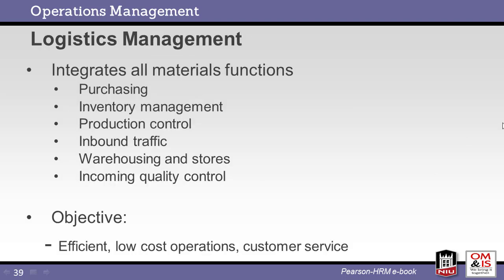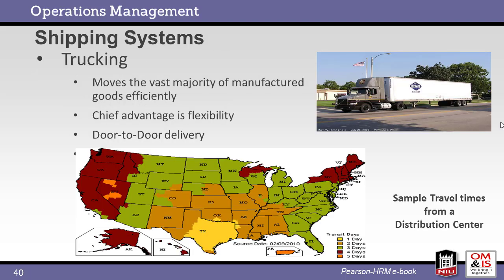Logistics management integrates purchasing, inventory, production, materials movement, and quality control. The goal is to improve efficiency, lower costs, and improve customer service. There are several available shipping systems. Trucking is common within the United States — this method is efficient, flexible, and low cost. The map shows that shipments from a location in southern Texas will reach the entire country in five days or less.